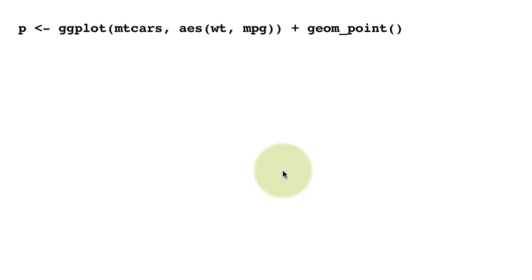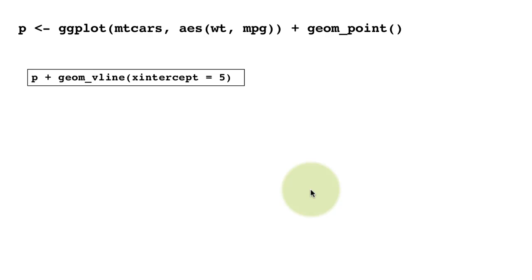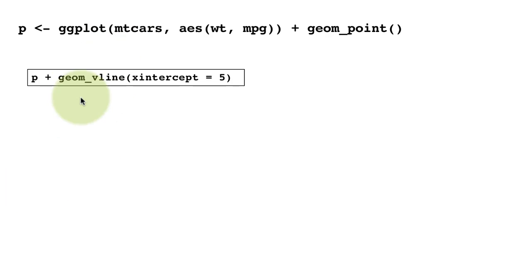All the information about the plot is stored in the variable called p. The beauty is that p has one layer right now, but we can string on additional layers to p just by using the plus sign. So we could say p plus geom_vline — a new geom we are introducing — which, as the name indicates, will draw a vertical line.